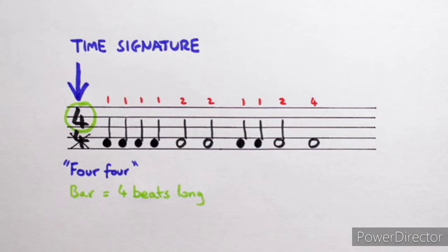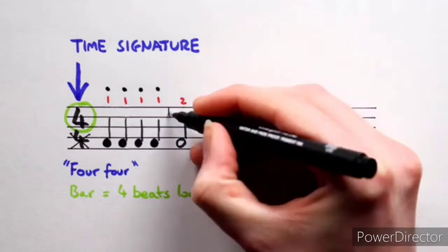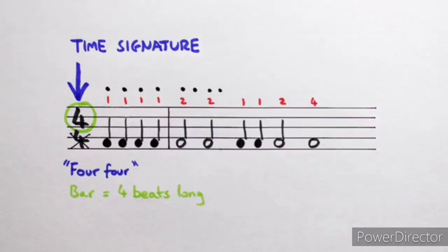All we need to do now is add up the counts until we get 4 and then draw a nice vertical bar line. Easy. So 1-2-3-4 bar line, 1-2-3-4 bar line.